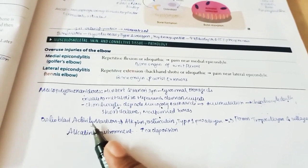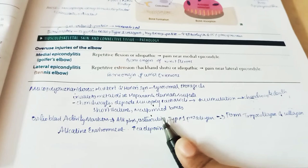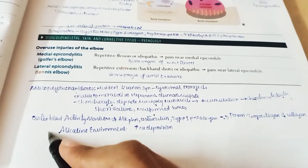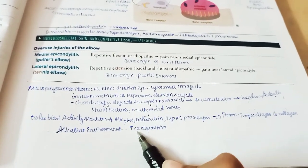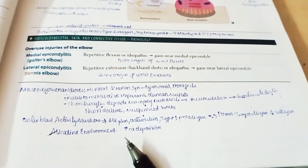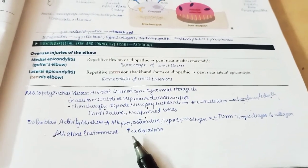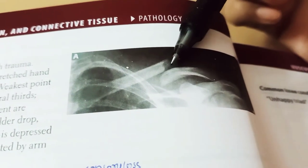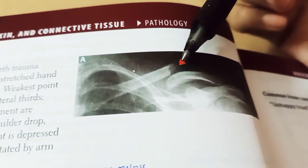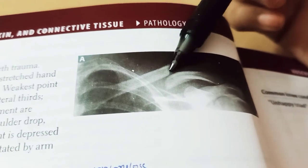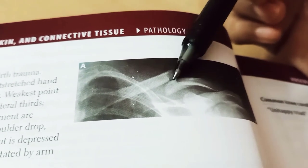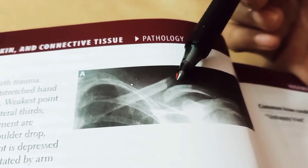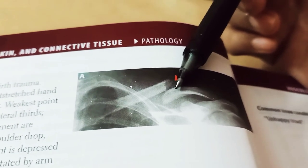Osteoblast activity markers include alkaline phosphatase, osteocalcin, and type 1 procollagen (which forms tropocollagen and collagen). Important: alkaline environment leads to increased calcium deposition (increased osteoblast activity), while acidic environment leads to decreased calcium deposition.